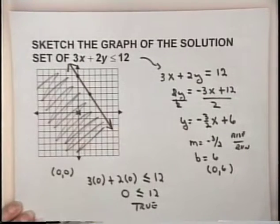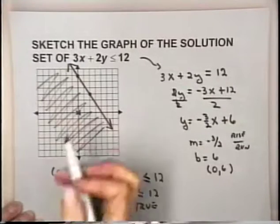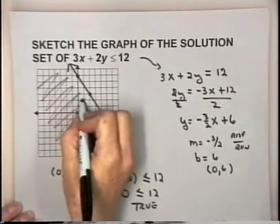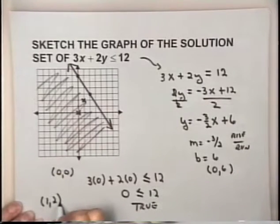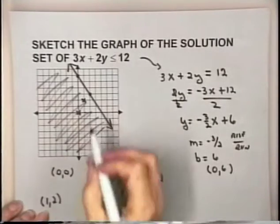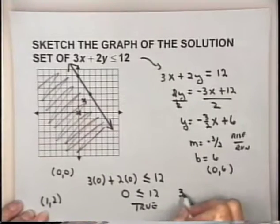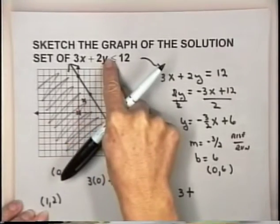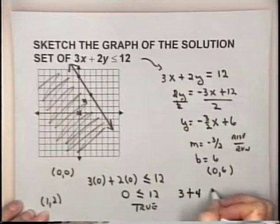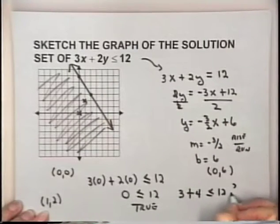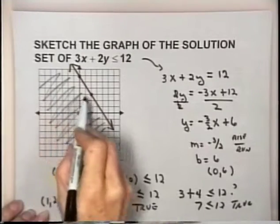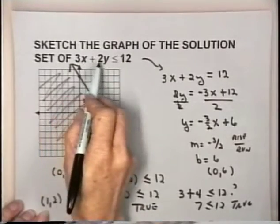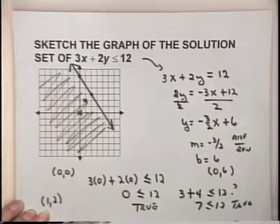Since the origin satisfies the inequality, it is a solution, and since all solutions are on one side of the boundary line, we shade the region containing the origin. Let's verify with another point (1, 2): 3 times 1 plus 2 times 2 equals 7. Is 7 less than or equal to 12? Yes, that's true. Any point on this side of the line will give a true statement.